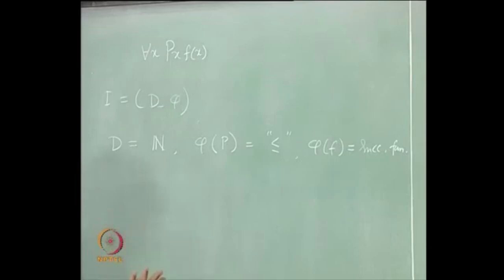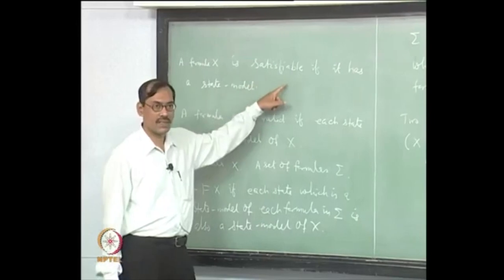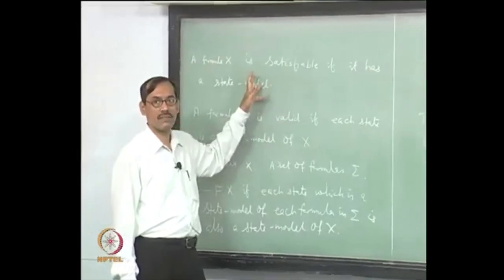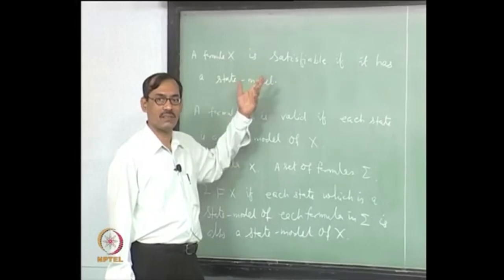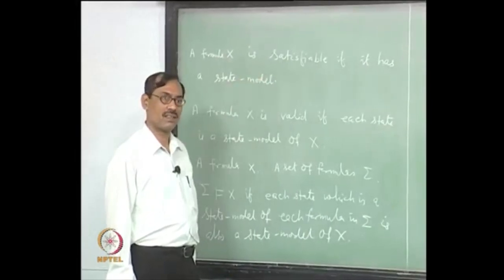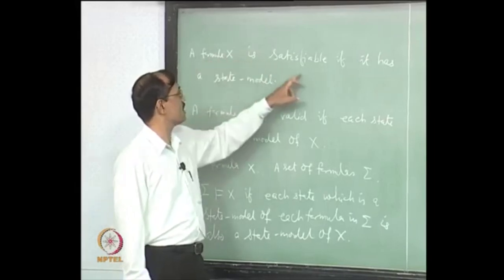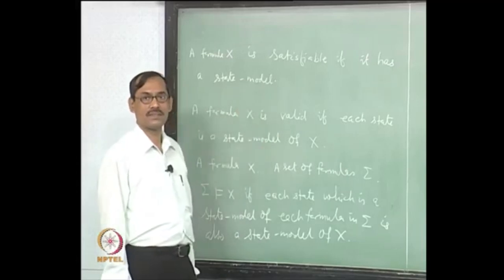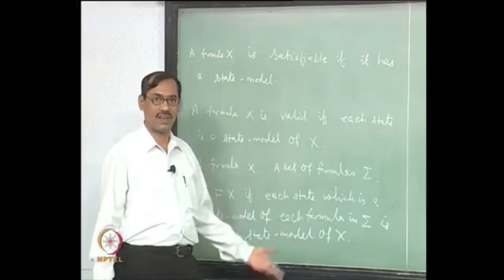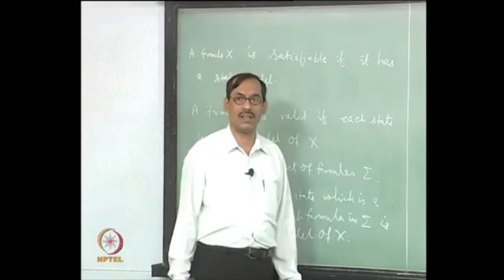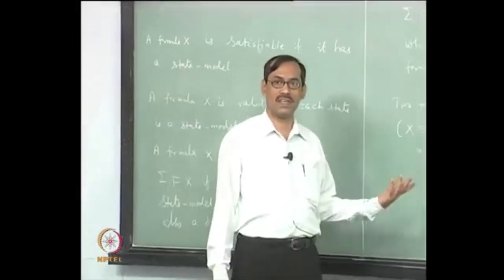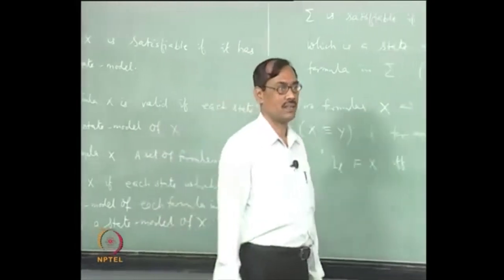The relevance lemma now says that if a sentence is satisfiable, you need not consider the state — you can simply consider the interpretation, because any state under that interpretation is the same thing for sentences. Then for sentences you can really redefine: a sentence x is satisfiable if it has a model, not even a state model. Because once it has a state model, it will have a model. Whatever interpretation the state is, that interpretation will also satisfy.